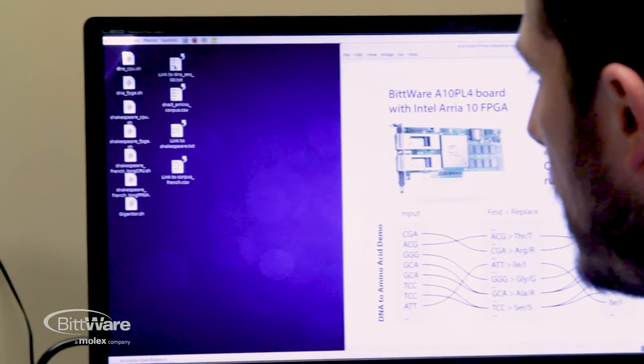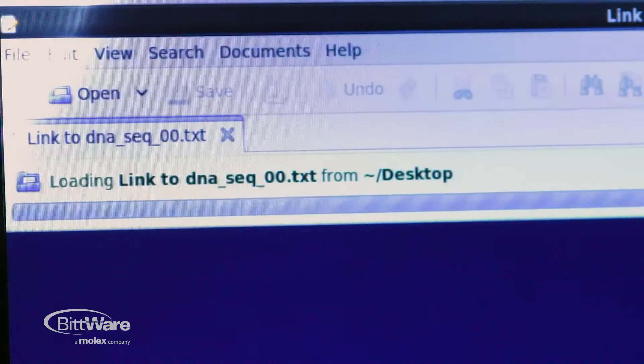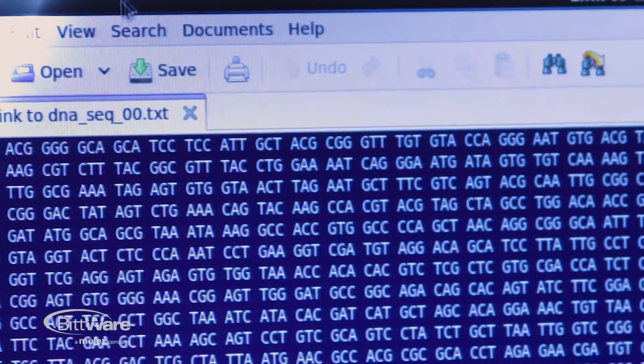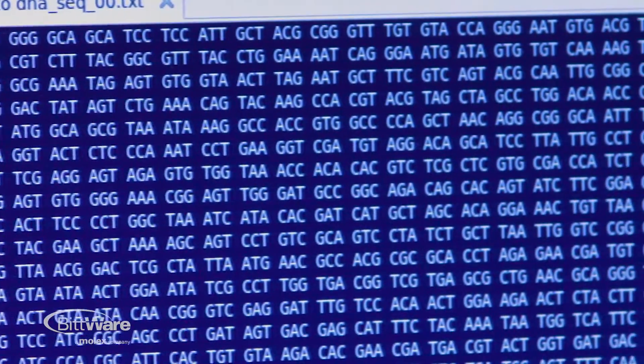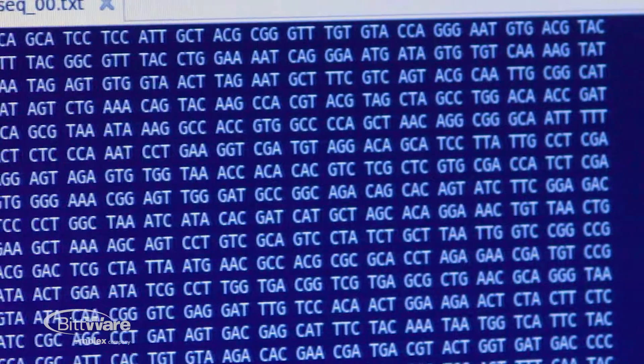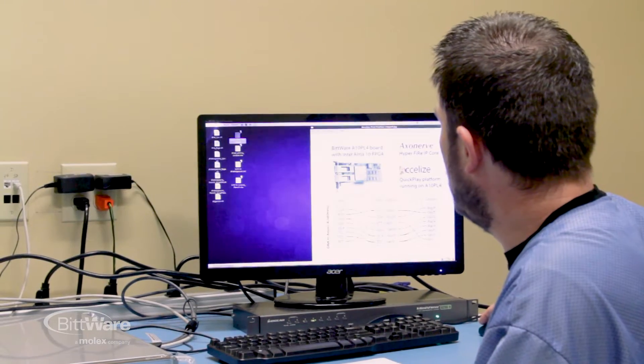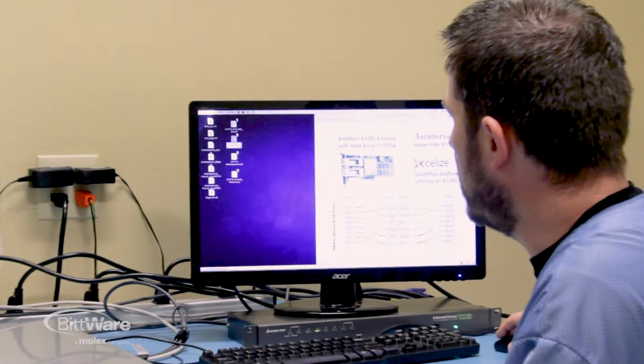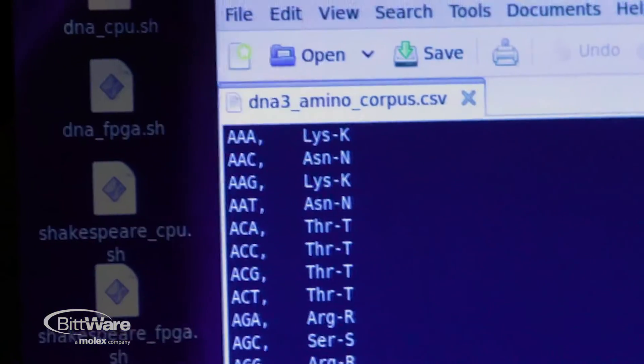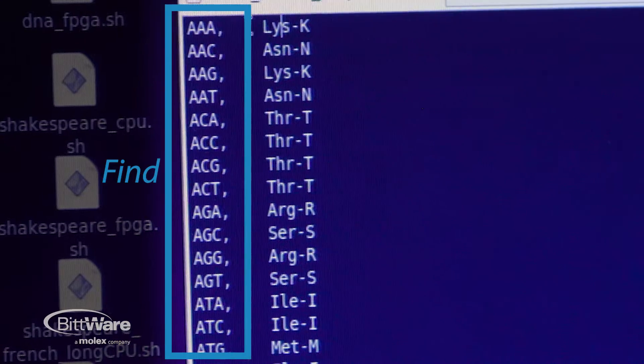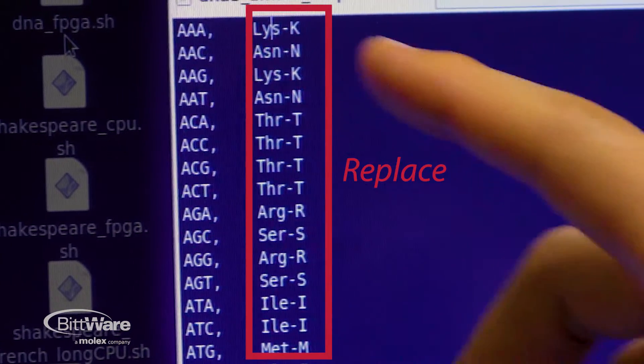So as I mentioned, Hyperfire is a find-and-replace accelerator. So this is going to be my input. I've got this text file with a DNA sequence. So all of these letters are going to be replaced. So that's my input file. And then the find-and-replace input is here. So for each three-letter DNA sequence, it's going to replace it over here with an amino acid.